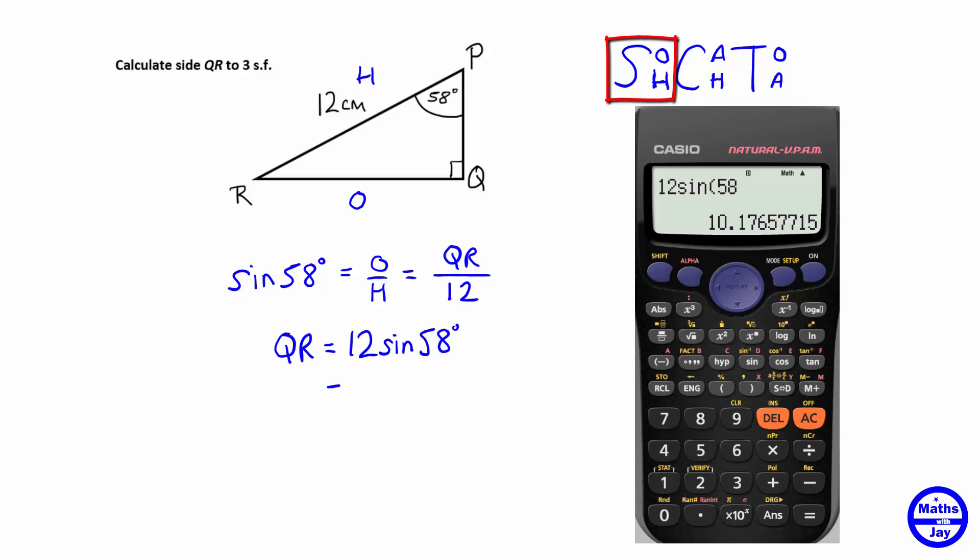So we've found that QR is equal to 10.17 something or other, and because we've been asked to give the side to 3 significant figures the 4th figure along will round up the previous one because it's more than 5 so we're going to get 10.2 and the units are centimetres and we want to write that that's to 3 significant figures.